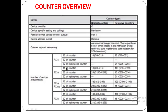In FX1N, 16-bit counters are 16 from C0 to C15, and 184 counters are retentive counters. In FX1N, the 32-bit counter has 20 counters available. For 32-bit high-speed counters, there is no normal type, but 21 32-bit high-speed retentive counters are available.